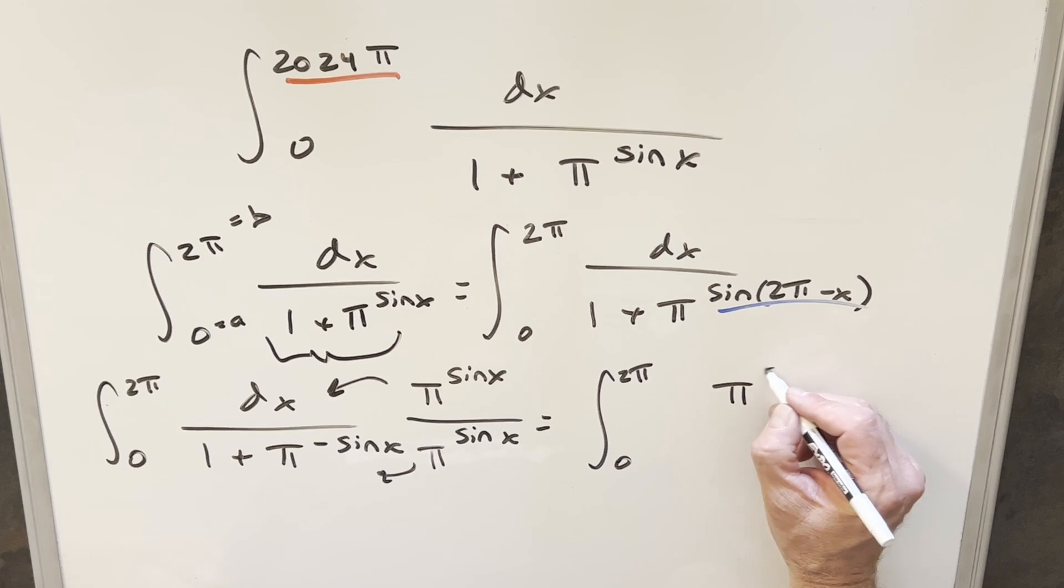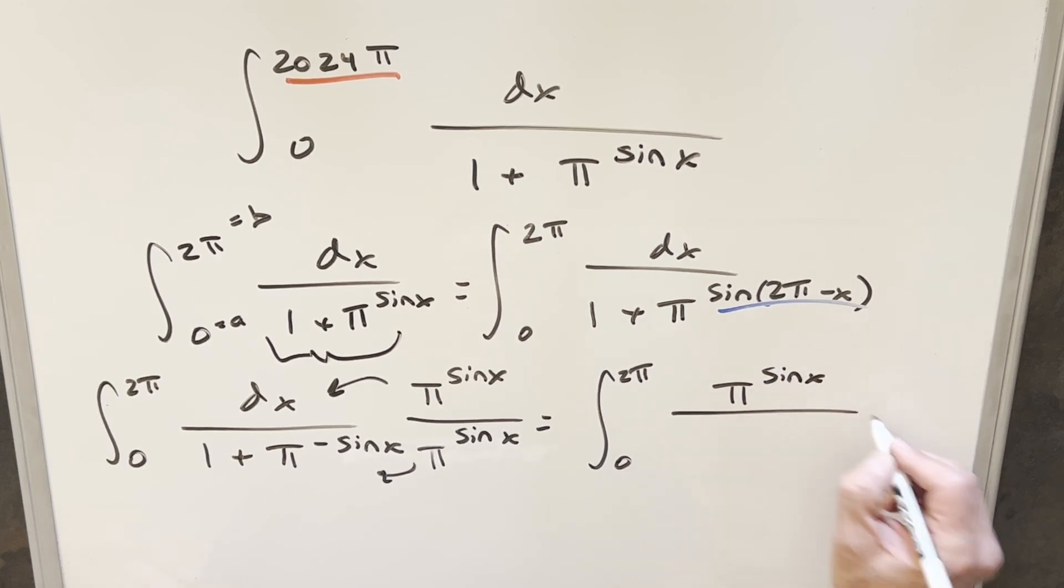The numerator here just becomes π to the sine x. Then distributing this in here, for this term right here, we get π. But then adding the exponents, we get π to the 0. That's just going to be 1. And then π times 1, π sine x times 1 is going to be π sine x.